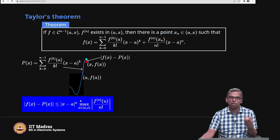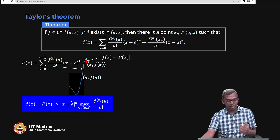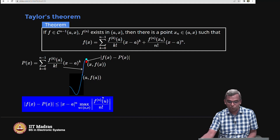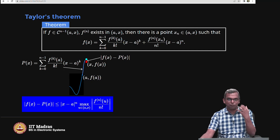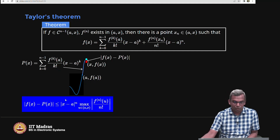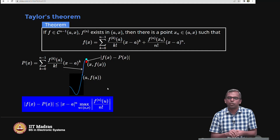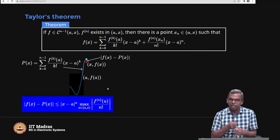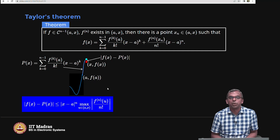This n enters the picture. You can make this smaller and smaller by increasing n, but this term is also important: you get the maximum over u in (A,x) of Fn of u divided by n factorial. Fn of u should not blow up beyond n factorial — as long as it is under control with respect to n factorial, you are okay. This tells you a wonderful result: smooth functions, once you know their derivatives and value at one point, let you easily predict what is going to happen going forward.